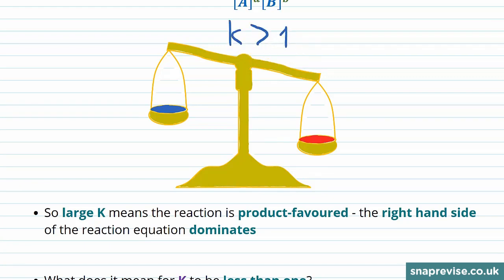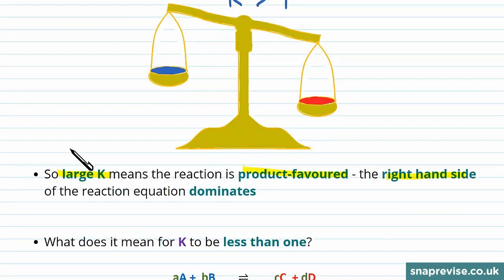The larger K is means that the reaction is more and more product favored, and the right-hand side of the equilibrium reaction dominates more and more with larger K.